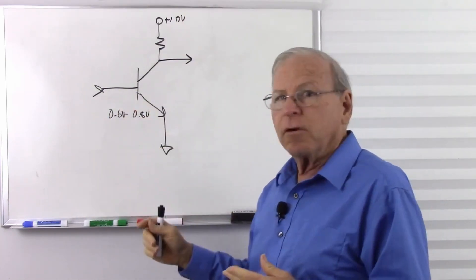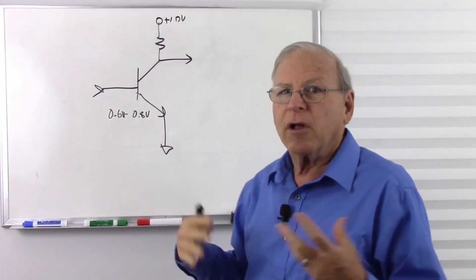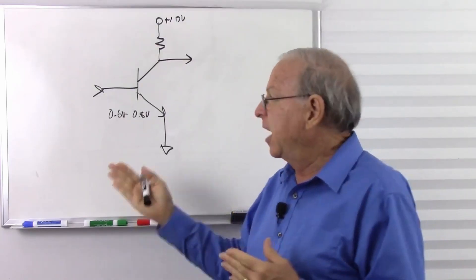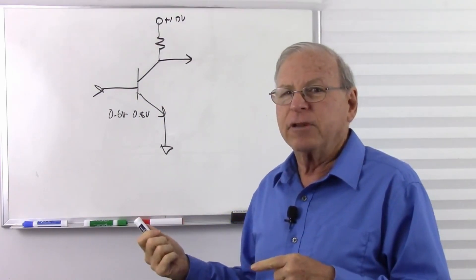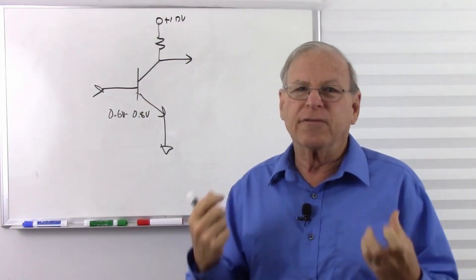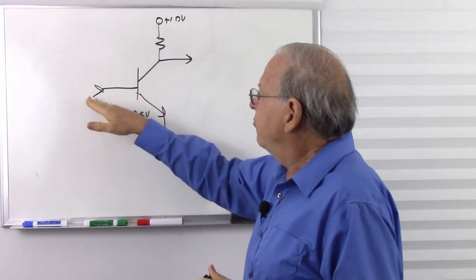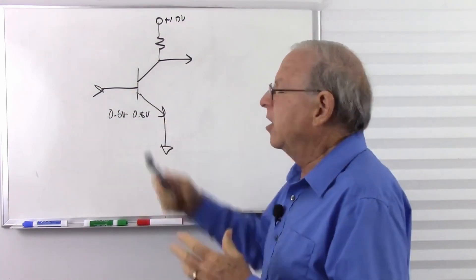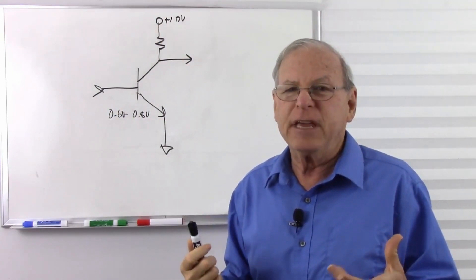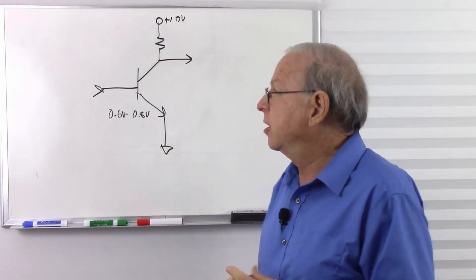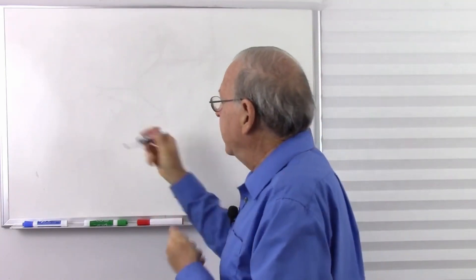Yes, changing the voltage does change the collector current, but the range is so small it's just not very convenient. So people say that the bipolar junction transistor amplifies current rather than voltage. I prefer to say it's current controlled rather than voltage controlled — but that's not really any better either. We say they amplify current because the relationship between the base current and the collector current is a very convenient linear relationship. Let's take a look at the graph of collector current versus base current to see the big difference.